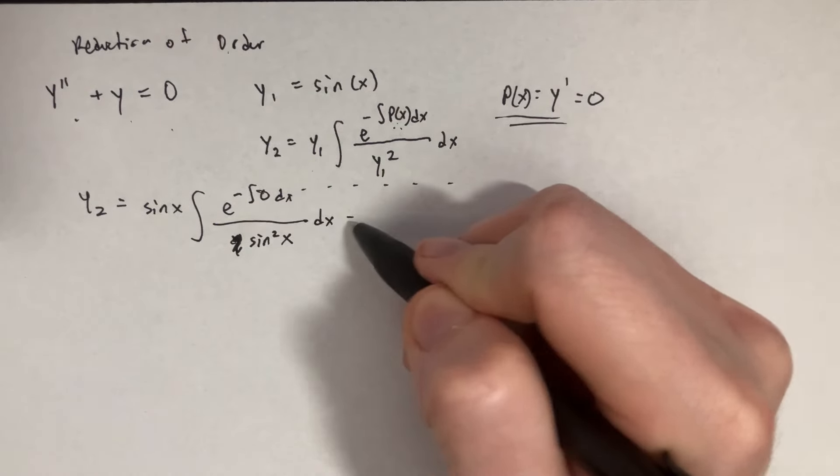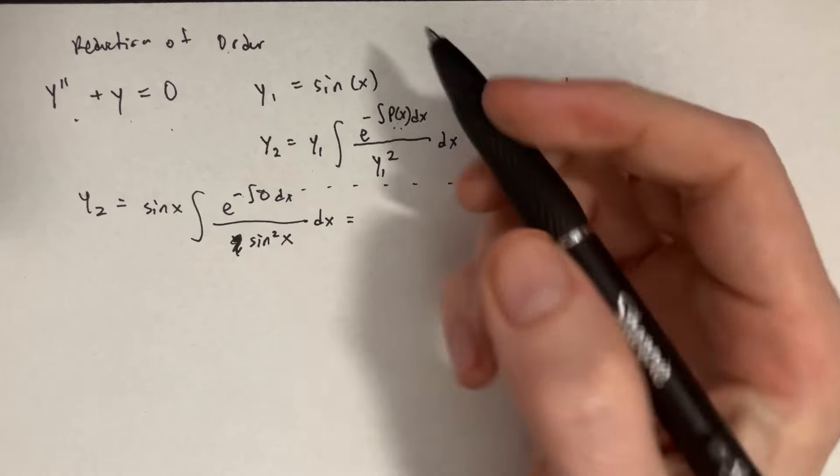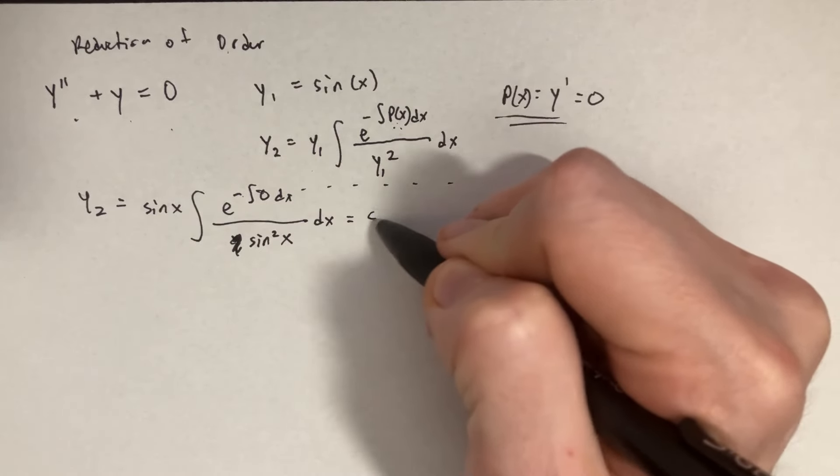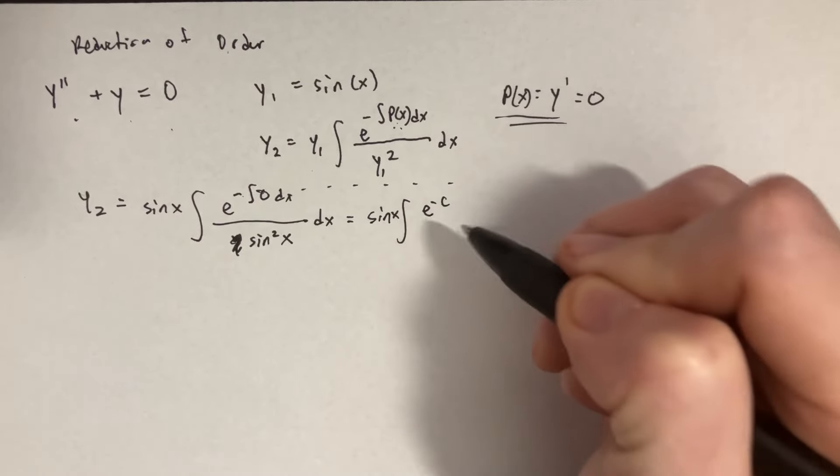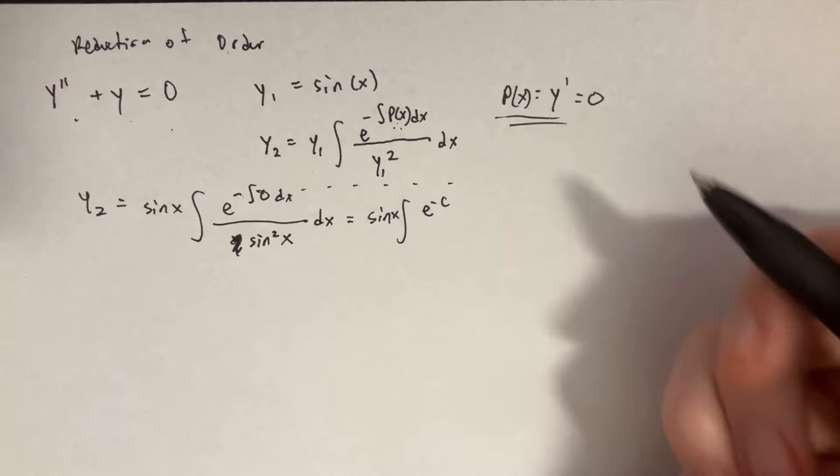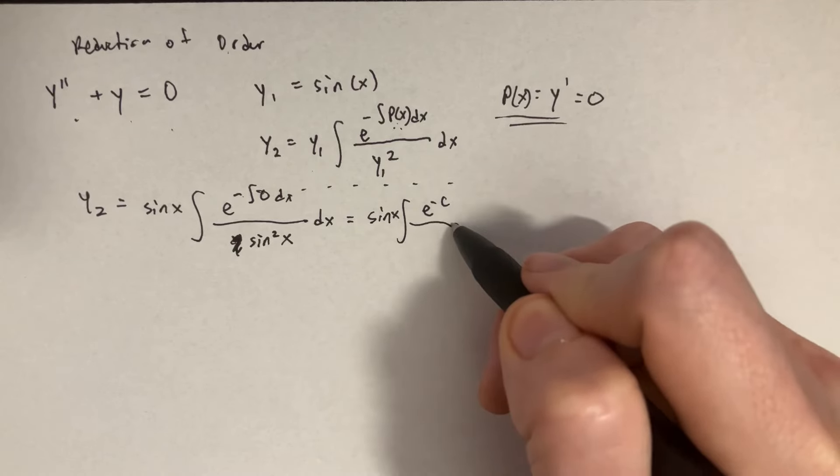The interesting thing here is that we have this e to the negative integral of 0. Well that's going to be somewhat canceling out to e to the negative c, because the integral of 0 is just going to be c. And that's kind of it for the top part.